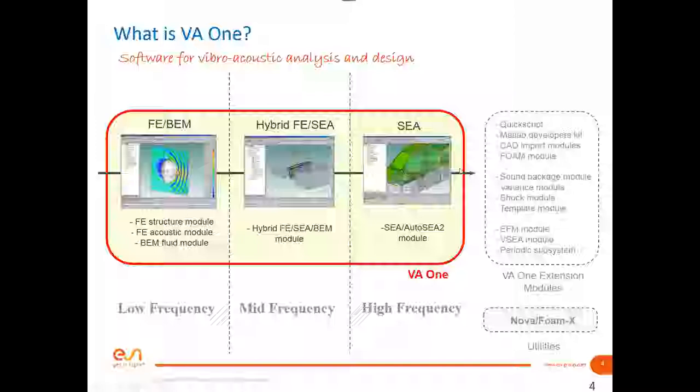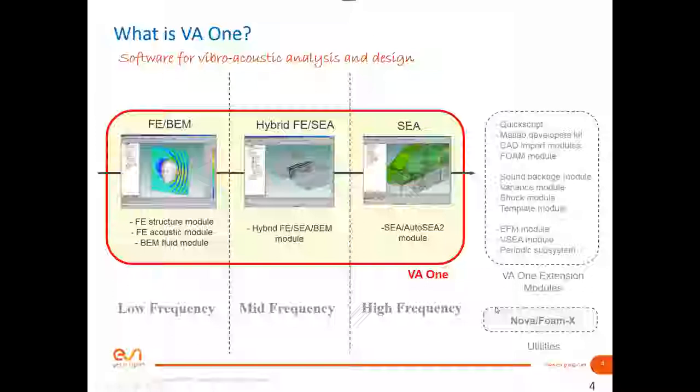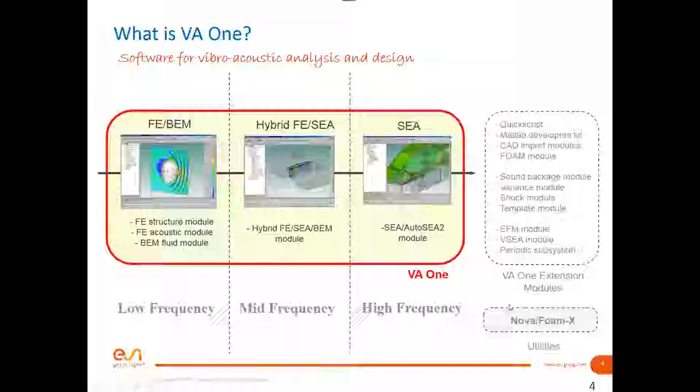Apart from these methodologies, there are a few extension modules in VA1 that allow you to extend your possibilities with the software. For example, a quick script allows you to automate manual operations. Nova4Mix is also software developed by ESI that allows you to study in more detail the material properties, transmission loss, and how energy propagates through materials.